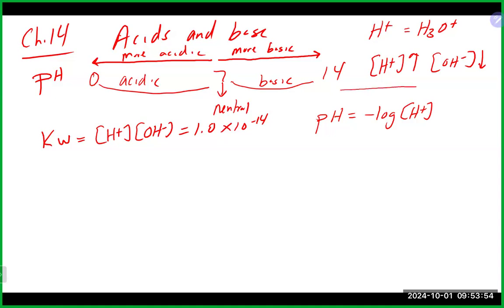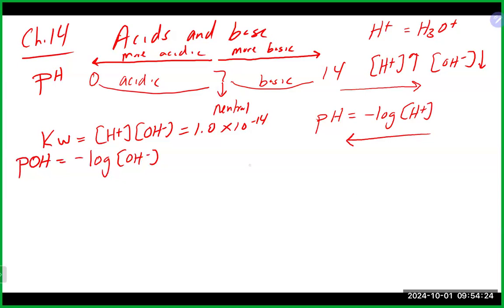If you have a non-display calculator where hitting log shows an error, you need to punch the formula in backwards — starting with the number, then log, then the negative button. There is a similar scale that measures the OH- concentration, known as the POH, which is minus the log of the OH- concentration. The nice relationship between those two is that pH plus POH equals 14.